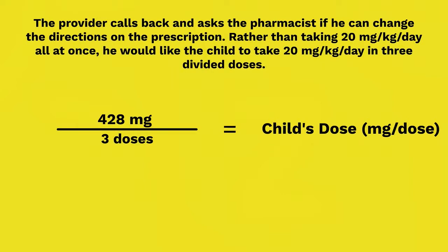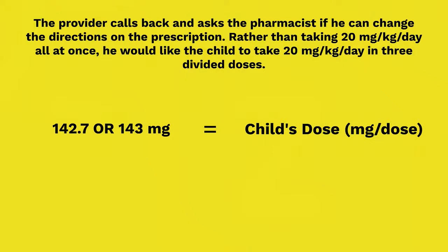But it doesn't stop there. The provider calls back and asks that rather than taking 20 milligrams per kilogram per day all at once, the child should take it in three divided doses. Using the total daily dose of 428 milligrams divided by 3 doses, the units are milligrams per dose. This gives 142.7, or 143 milligrams per dose after rounding.